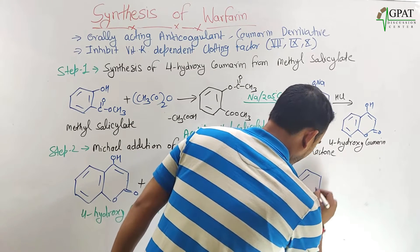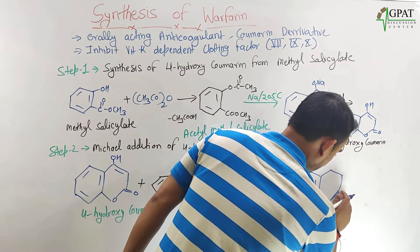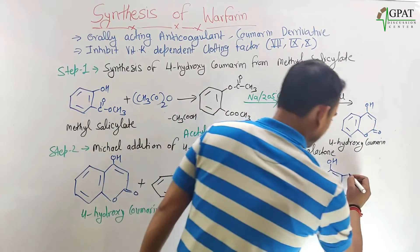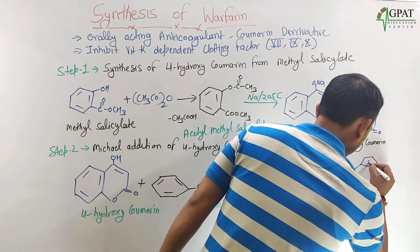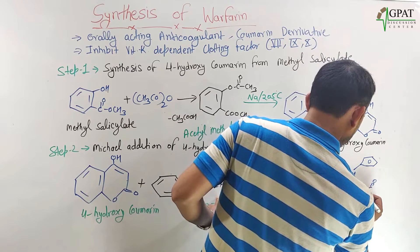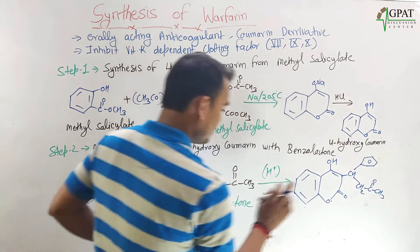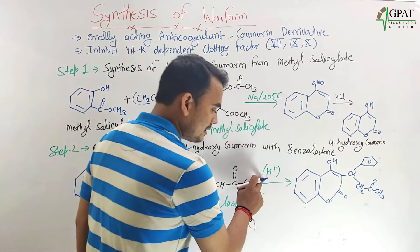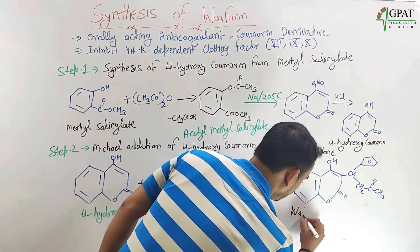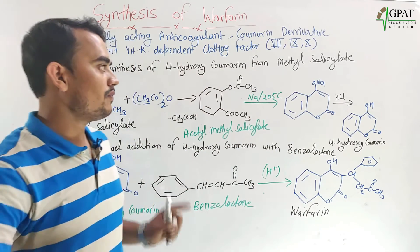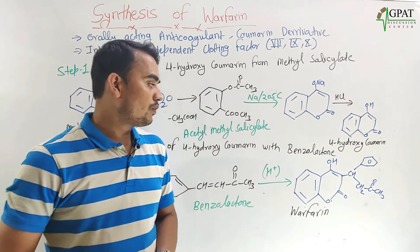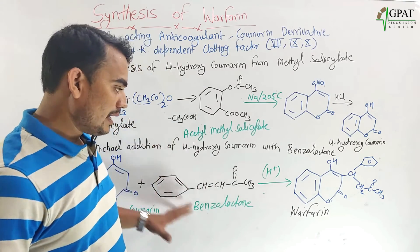Finally, we get our product — that is warfarin. The structure has an OH group here, with the benzene ring joined at one position and at the second position with a CH2 group, then a CO and CH3. This is our final product, warfarin. So this is the synthesis of warfarin — a two-step reaction: step one is synthesis of 4-hydroxycoumarin from methyl salicylate, and step two is Michael addition of 4-hydroxycoumarin with benzalacetone to finally give warfarin.